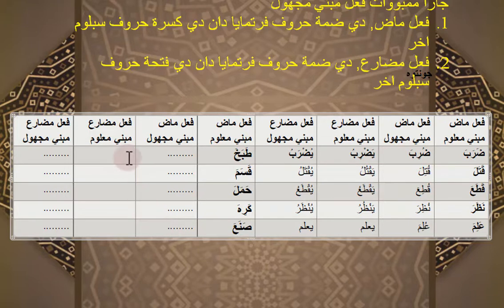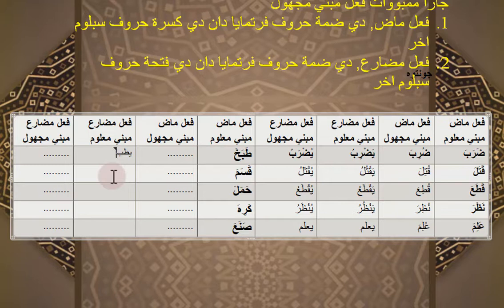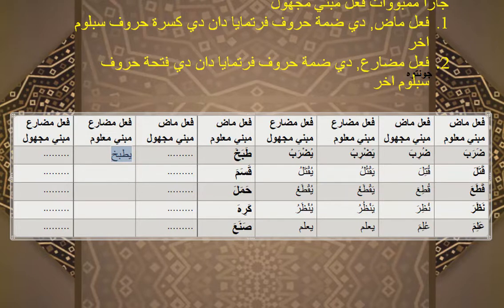Sekarang kalau Tobaho fi'il mazi, berarti ada fi'il mudhare-nya. Fi'il mudhare-nya Tobaho itu apa? Misalnya Tobaho, kalau fi'il mudhare-nya adalah Yadhbahu. Yadhbahu kalau dijadikan fi'il mabni majul, menjadi Yudhbahu. Yaitu di-dhammah awalnya, dan di-fathah huruf sebelum akhir.